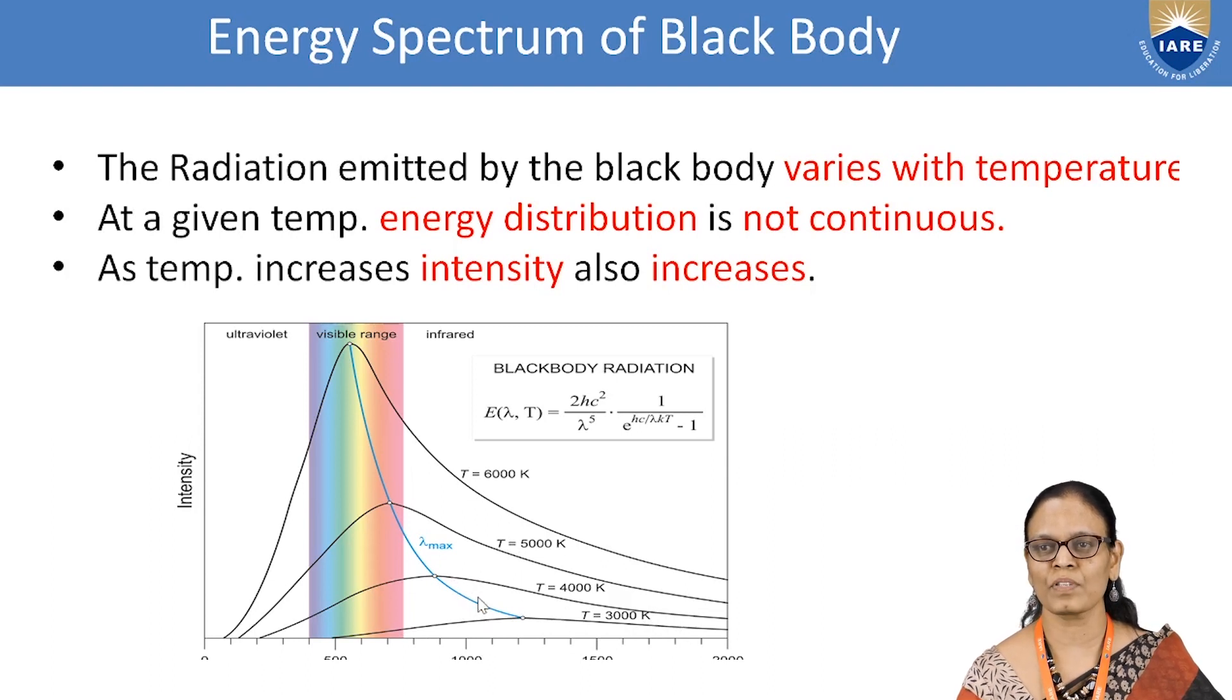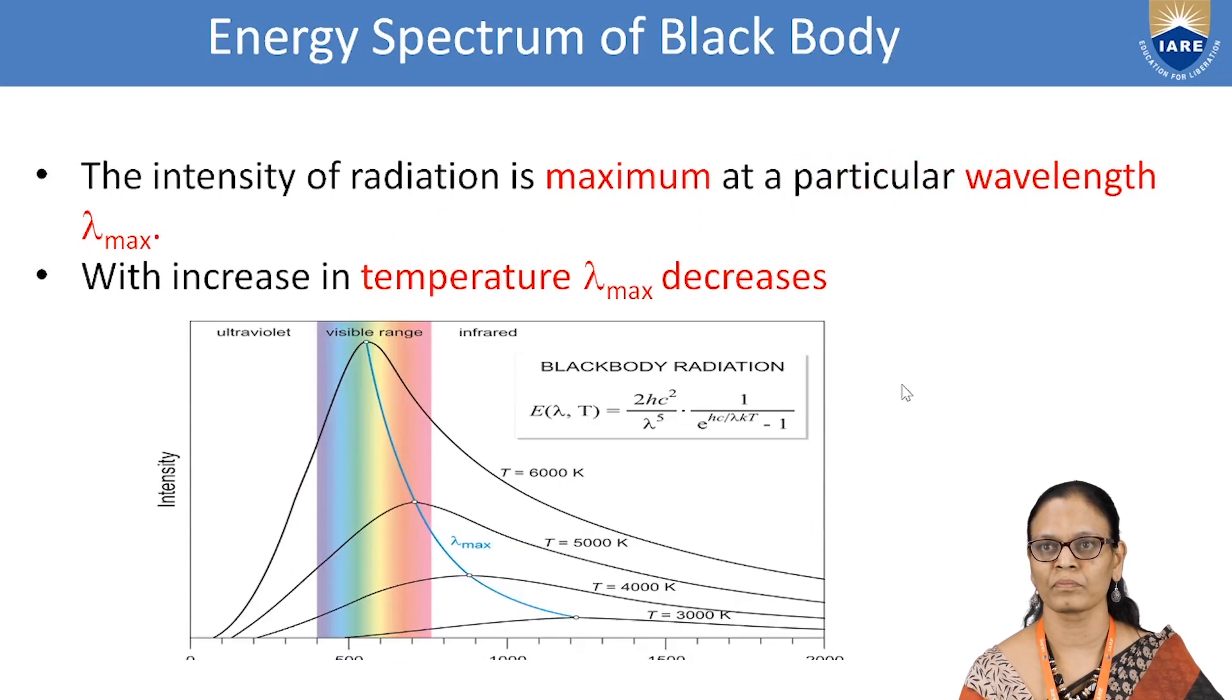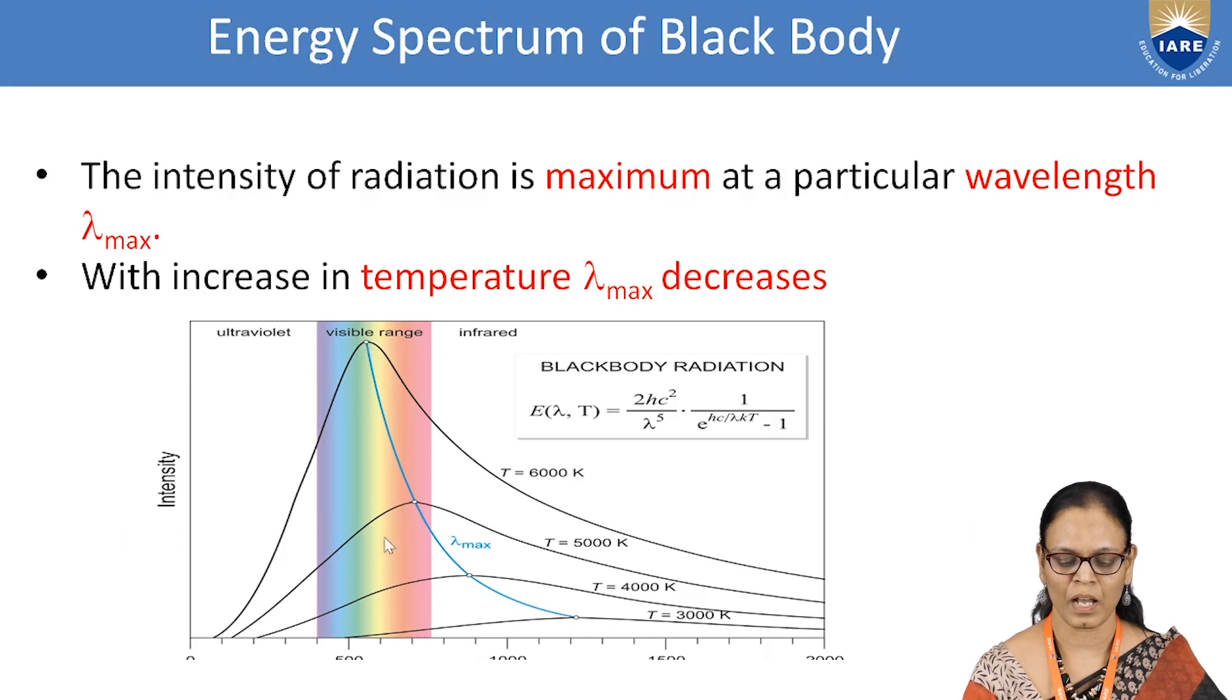If you observe the curves for various temperatures, the intensity keeps on increasing. As the temperature increases, the intensity also increases. The intensity of radiation is maximum at a particular wavelength. At T is equal to 3000 Kelvin, this is the maximum intensity. At T is equal to 4000 Kelvin, the maximum is at that particular wavelength. At T is equal to 6000 Kelvin.